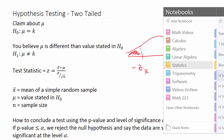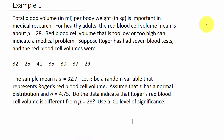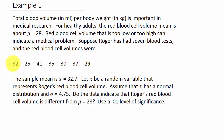Let's take a look at an example. Total blood volume in milliliters per body weight in kilograms is important in medical research. For healthy adults, the red blood cell volume mean is about mu equals 28 — that's the population mean. A value too low or too high can indicate a medical problem. Roger has had seven blood tests and the red blood cell volumes give us a sample mean of X-bar equals 32.7.